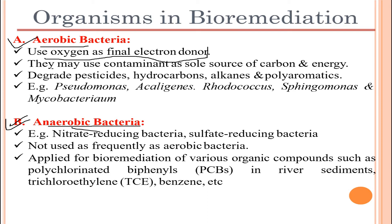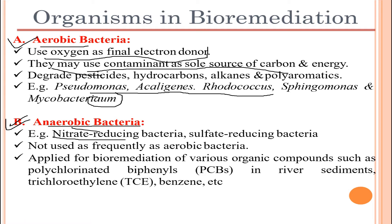Aerobic bacteria may use contaminants as their sole source of carbon and energy, extracting carbon energy from the contaminants they degrade. They also degrade pesticides, hydrocarbons, alkanes, and polyaromatics. Some examples of aerobic bacteria are Pseudomonas, Alcaligenes, Rhodococcus, Sphingomonas, and Mycobacterium.